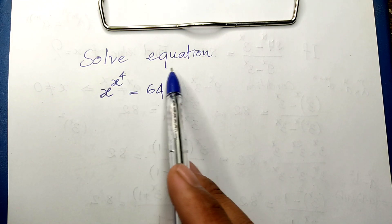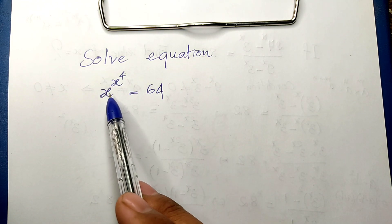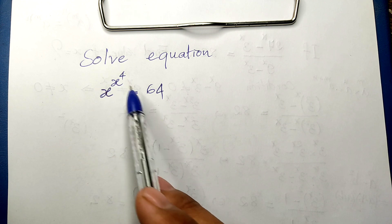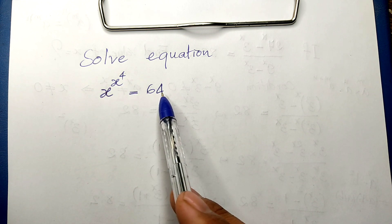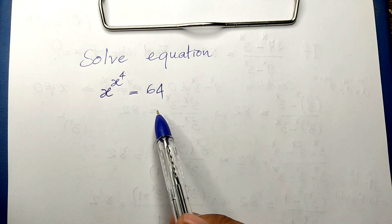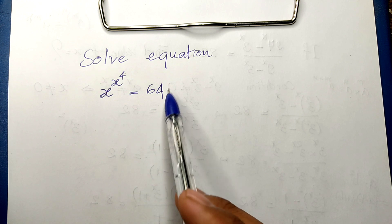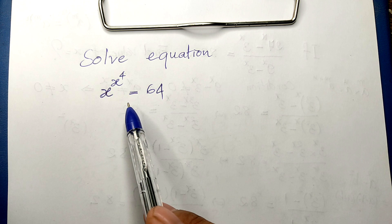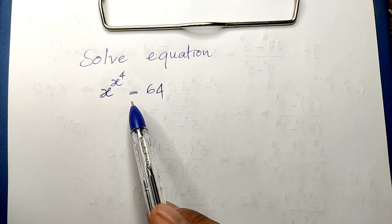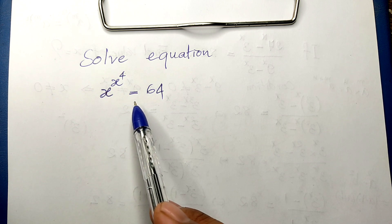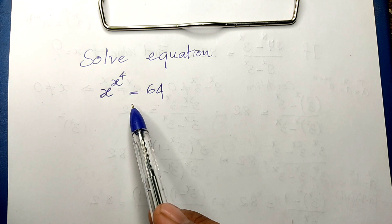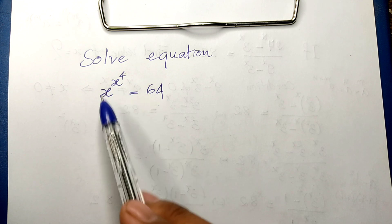Solve equation: x to the x to the 4th power equals 64. Hello everyone, welcome to my YouTube channel. Today I have one exercise like this, and this is an exponent power question. It's a nice problem. You know how to solve this?